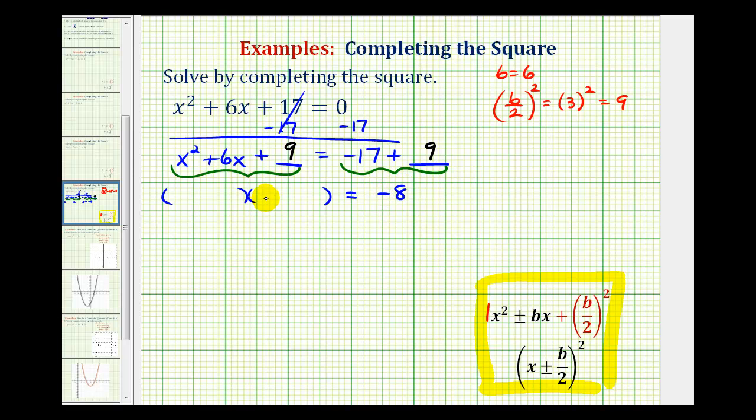And now, the first terms of the binomial factors will be the factors of x squared, which are x and x. And now, we want the factors of positive 9 that have a sum of positive 6, which would be 3 and 3. So we have plus 3 here and plus 3 here.